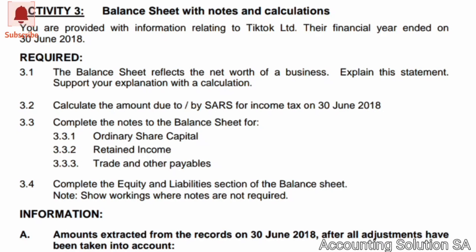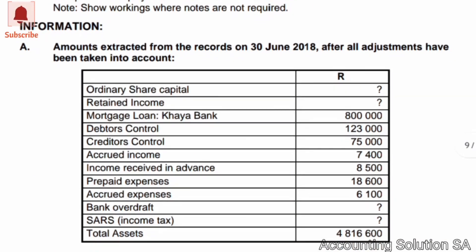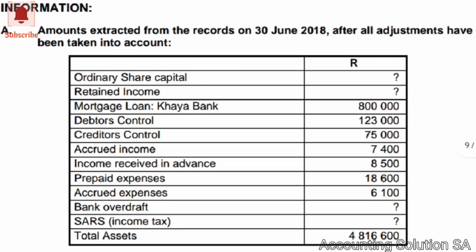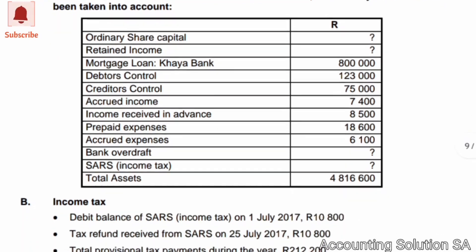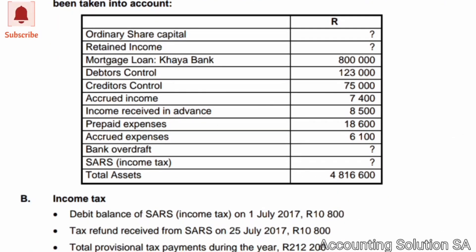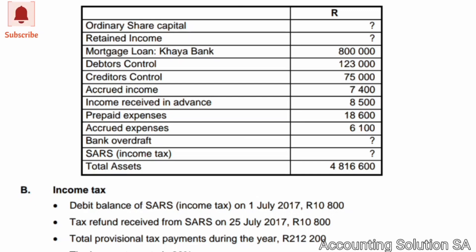The reason I skipped the other two notes is because I have another video where I prepared the ordinary share capital and retained earnings notes. Now, looking at the information provided for the year ended 30 June 2018, amounts were extracted from records after all adjustments. Notice that income tax does not have a balance given - that's because we need to calculate that amount.